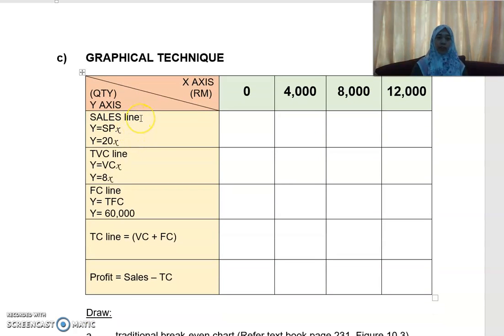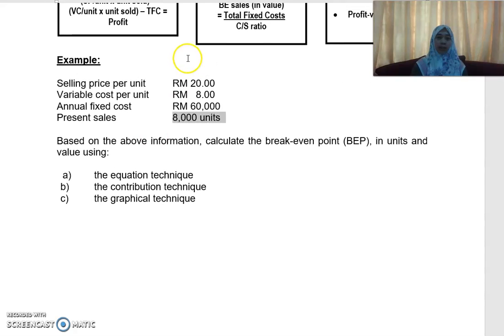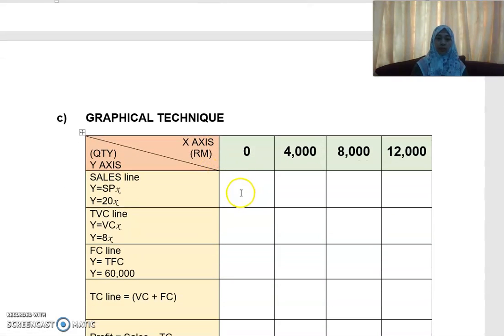For your y-axis, the first line to draw is your sales line. Your sales line will be SP times x, meaning y equals 20x, where 20 is the selling price per unit. So if you sell 0 units, your sales will be 0. If you sell 4,000 units, that is 4,000 times 20, and so on.